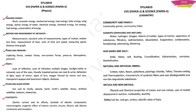Now we have the syllabus for Chemistry — called EVS for Paper 1 but Science for Paper 2. Topics include: Community and Family (under EVS for Paper 1), Elements, Compounds and Mixtures (Chemistry, Paper 2), Acids, Bases and Salts, Natural and Artificial Fibers, Metals and Non-Metals. Then there is Amazing Energy which can be placed in Paper 1 category. We also have Coal, Coal Tar, and Coal Gas, which come under both EVS and Chemistry.